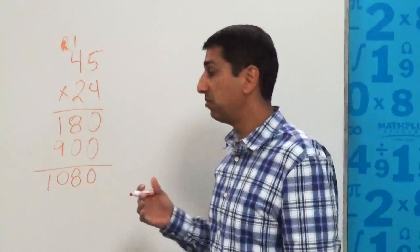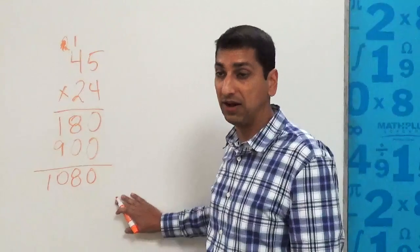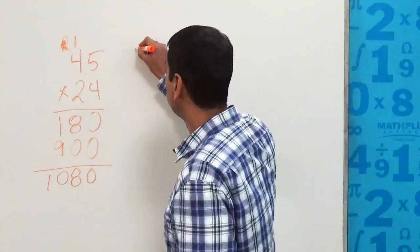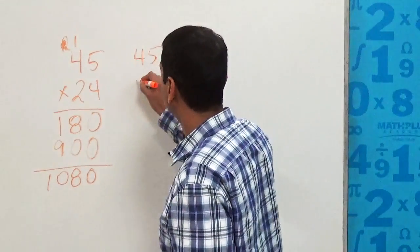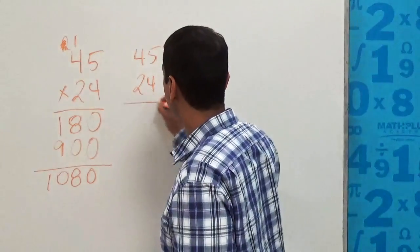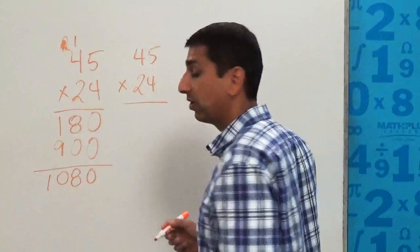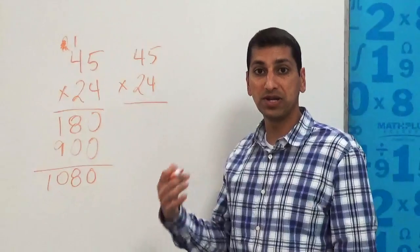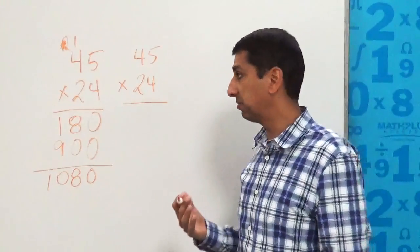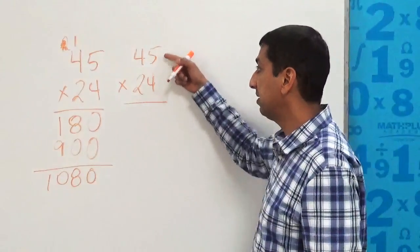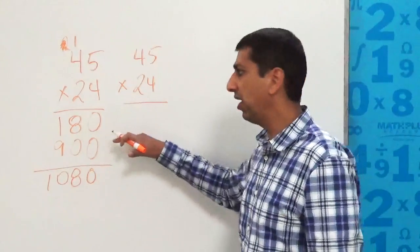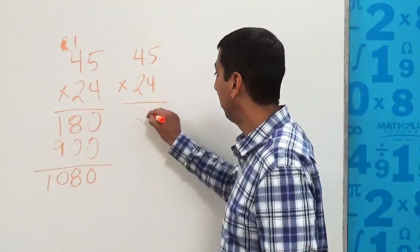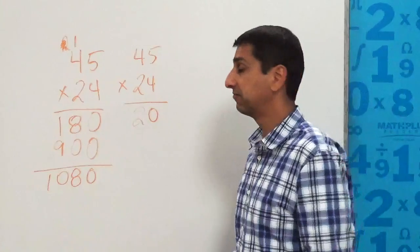Now, these days, before we teach kids the standard algorithm, we might teach them what's called partial products, where we're going to help them see what's going on with place value in these problems. So again, we'll start with four times five, which is 20, and we'll just go ahead and write that whole thing right here, 20. That's the first part of the problem.